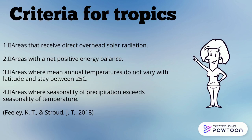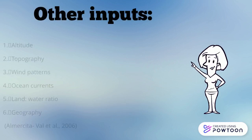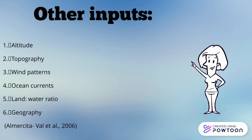There are other inputs as well to the composition of a tropical area, such as latitude, topography, wind patterns, ocean currents, land to water ratio, and geography.